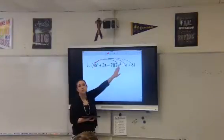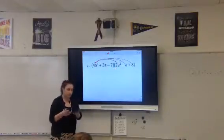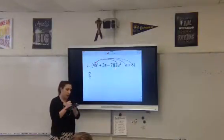So what's 4a squared times 2a squared, Nyasia? 4a squared times 2a squared? 8a to the fourth. Good, 8a to the fourth.